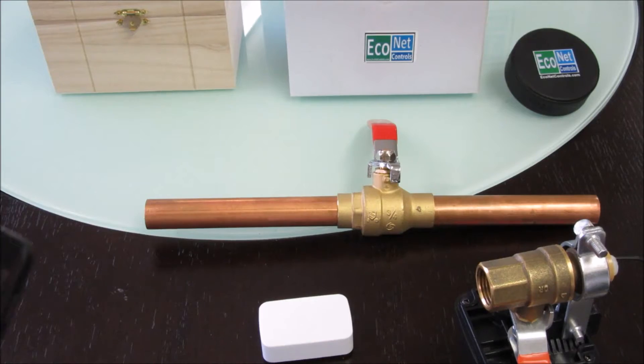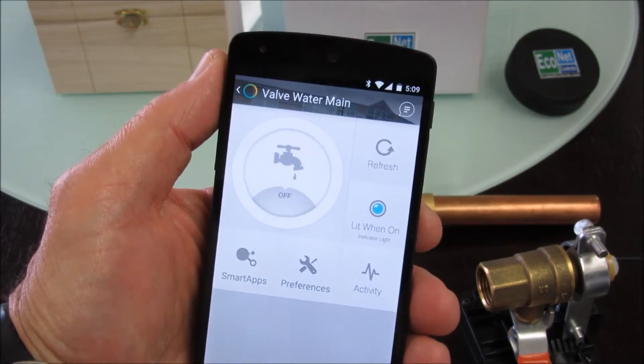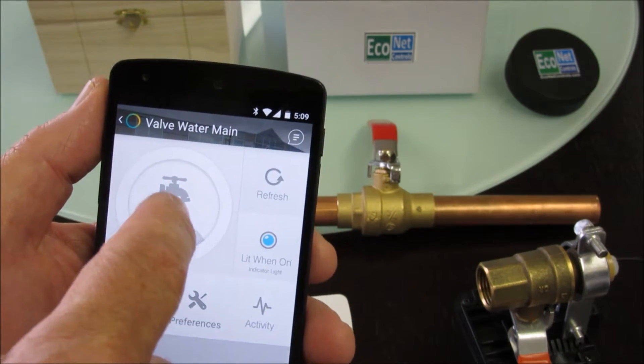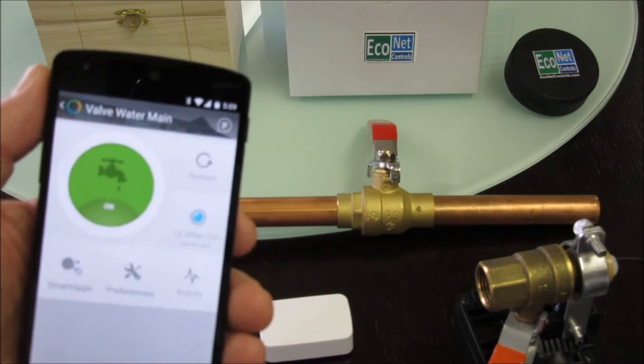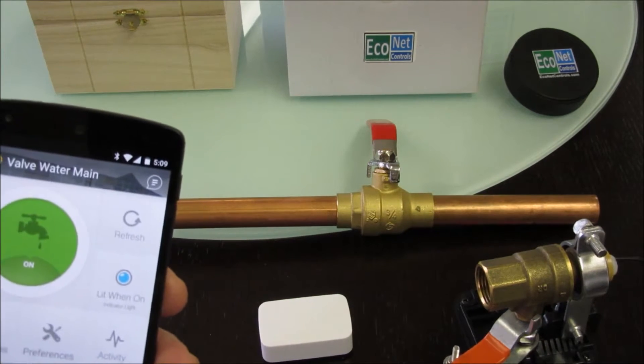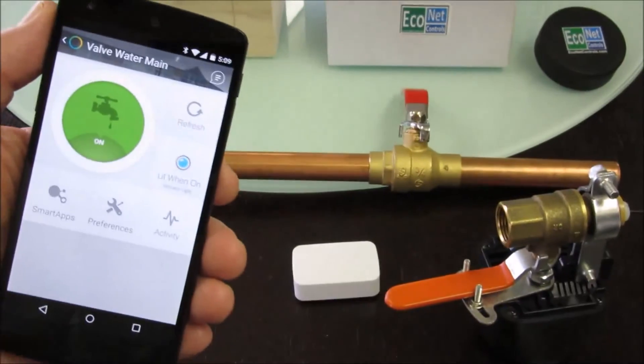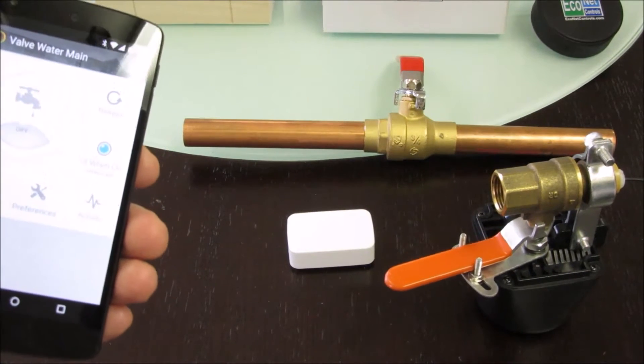I'm just in the Smart Things menu here and I just have it showing up with the icon as a tap. So with the Smart Things controller now you can open and close it, and you can see it's closing there. And of course you can close it.